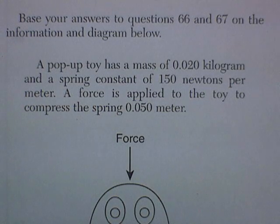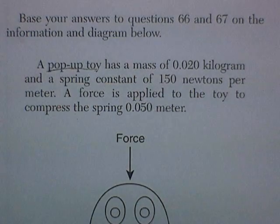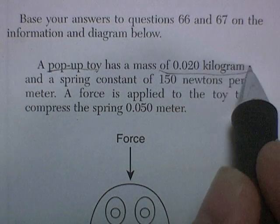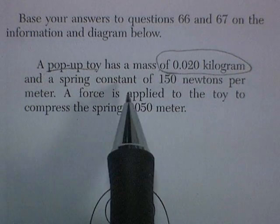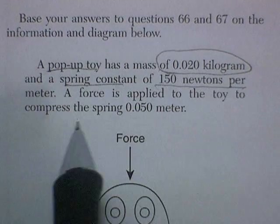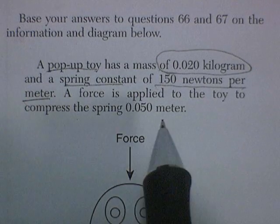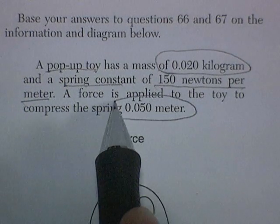All right, we're still in the June 07 exam, and the last couple of questions on page 11, starting with 66 and 67. Both of those questions deal with a pop-up toy that has a mass of 0.02 kilograms, that's about 20 grams, and a spring constant of 150 newtons per meter. A force is applied to the toy to compress the spring 0.05 meters.